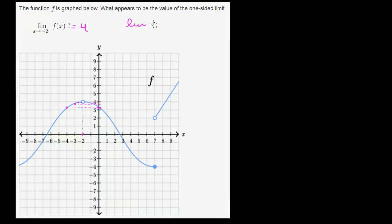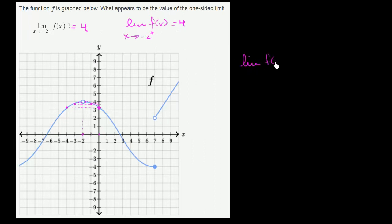If we also consider the limit of f of x as x approaches negative 2 from the positive direction: when x is 0, f of x seems right over here; when x is negative 1, f of x is there; when x is negative 1.9, f of x seems right over here. We're getting closer and closer to 4. Because the left-hand limit and the right-hand limit are the same value — both one-sided limits approach the same thing — we can say the limit of f of x as x approaches negative 2 exists, and it is equal to 4.